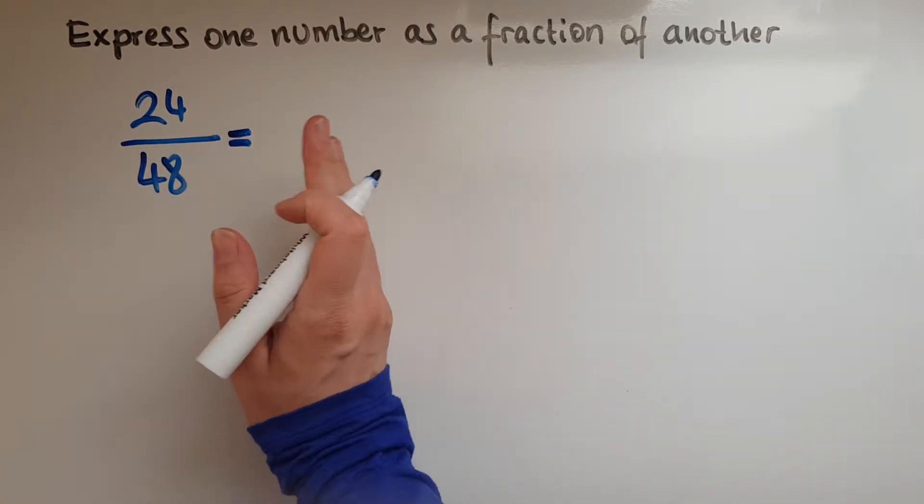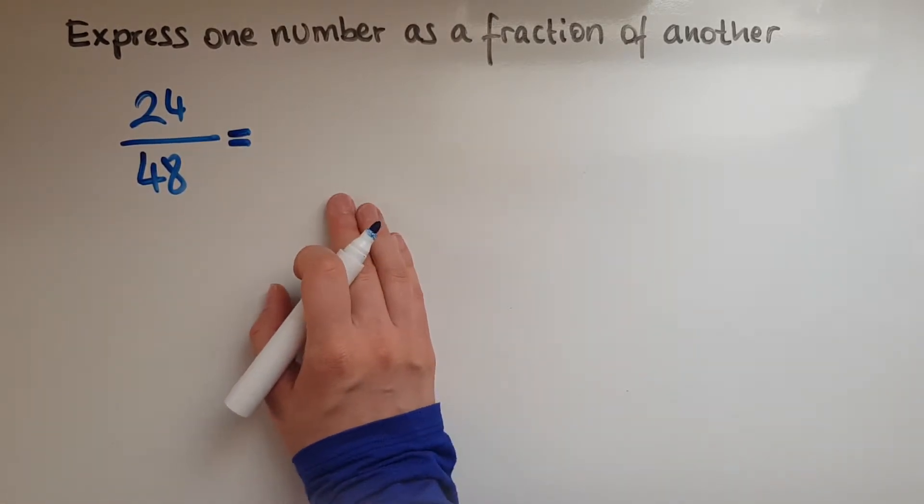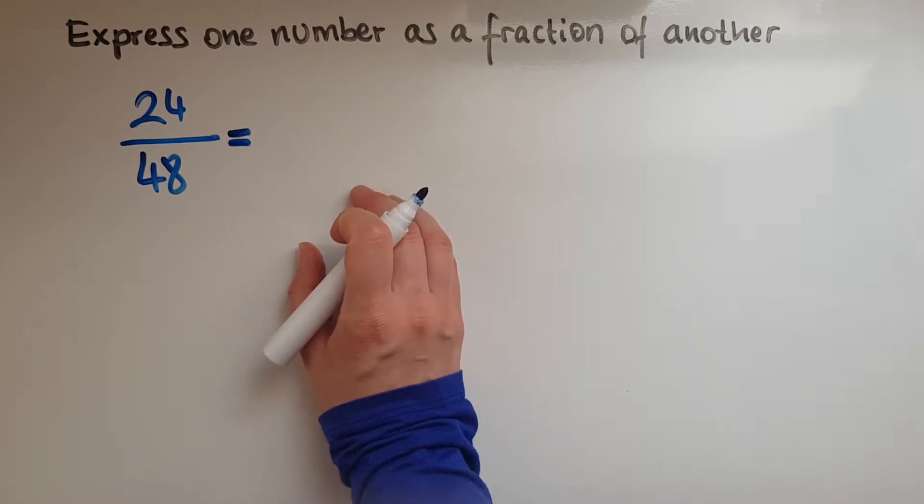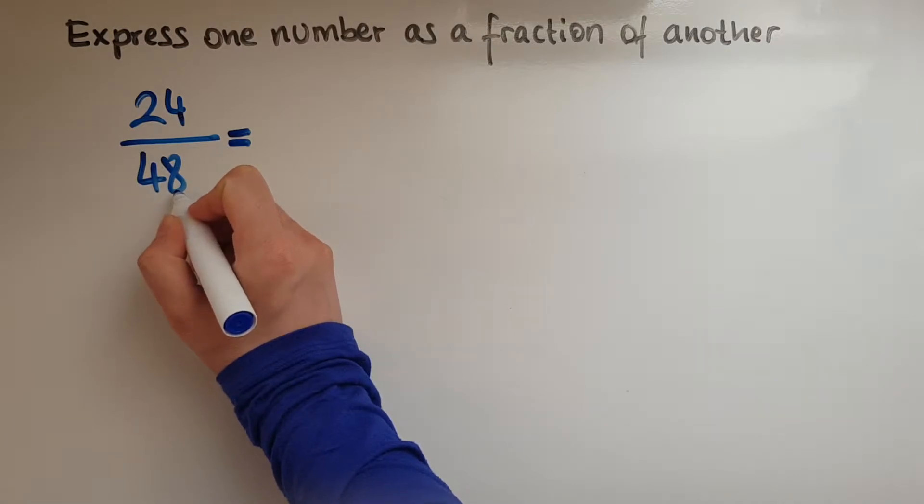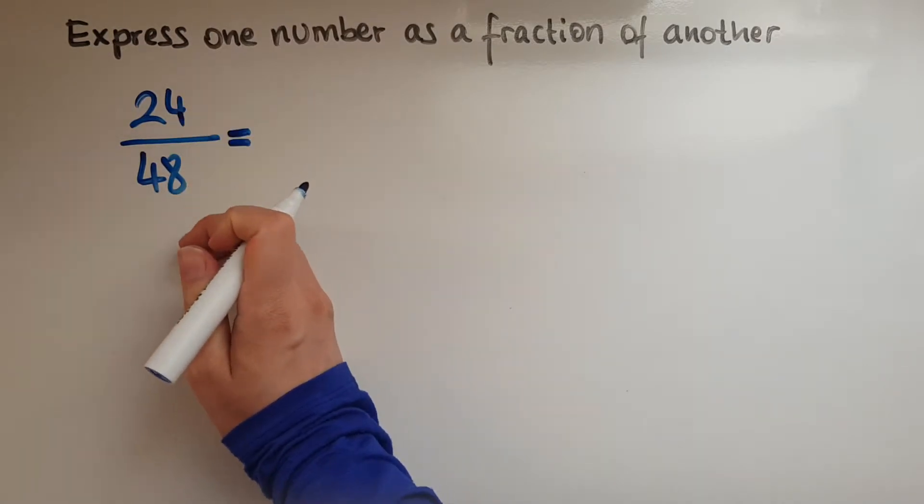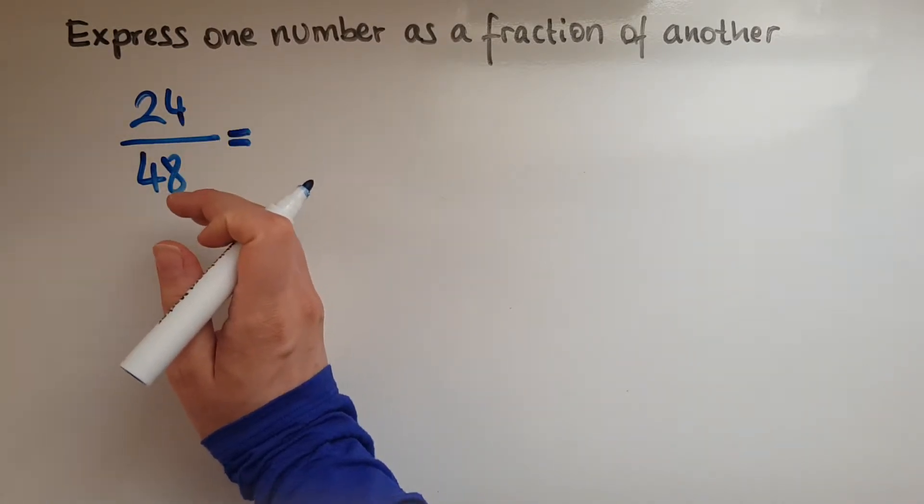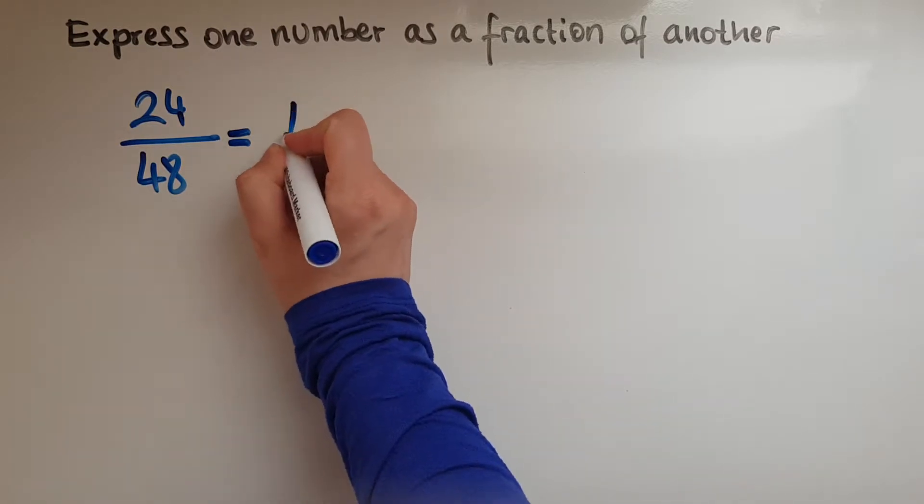But we can simplify this further to find a simpler fraction. £24 out of £48. Now, just by looking at that, I can see that £24 is half of £48, so I could say half.